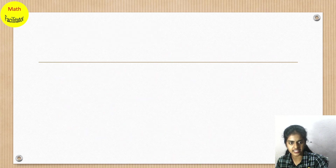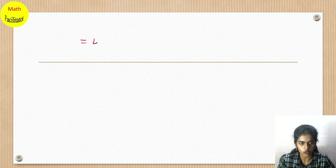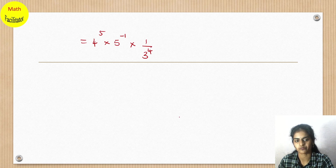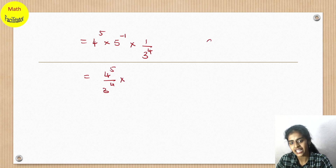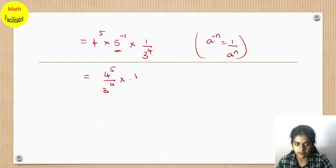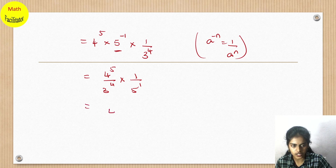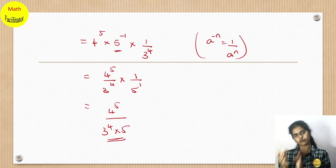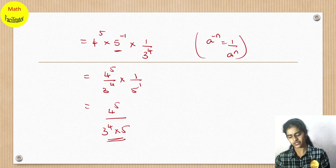So that equals 4⁵ × 5^(-1) × 1/3⁴. Writing 5^(-1) as 1/5 gives 4⁵ divided by (3⁴ × 5). You can leave the answer like this, or further expand: 4⁵ is 4 multiplied five times and 3⁴ is 3 multiplied four times.